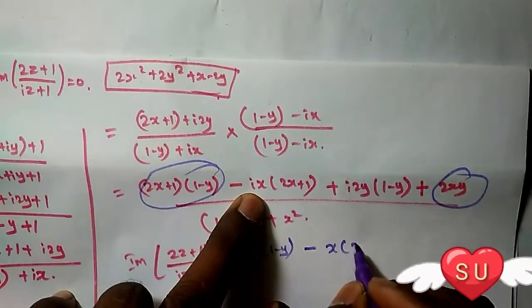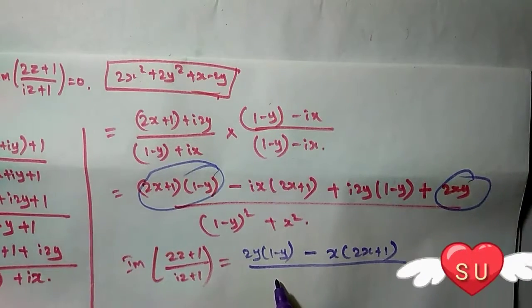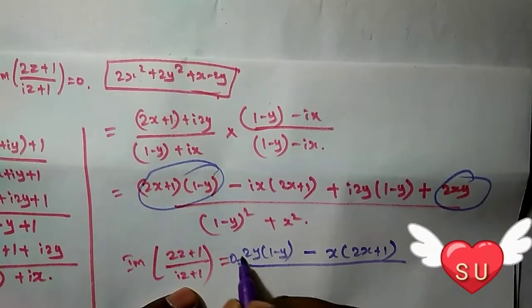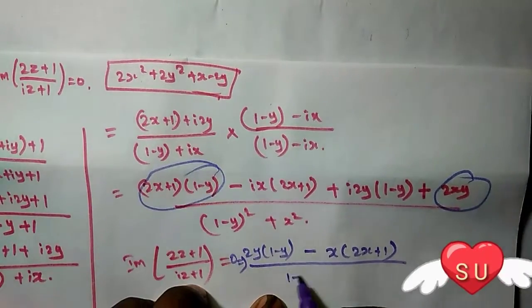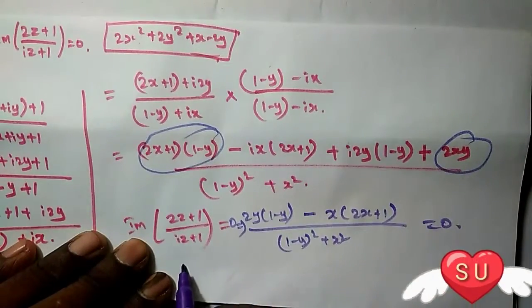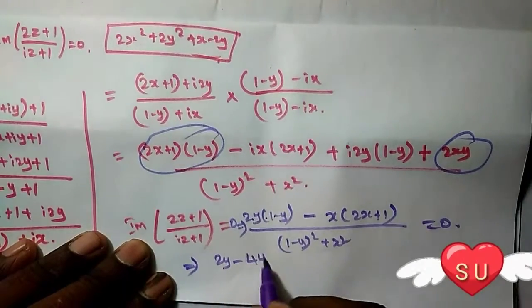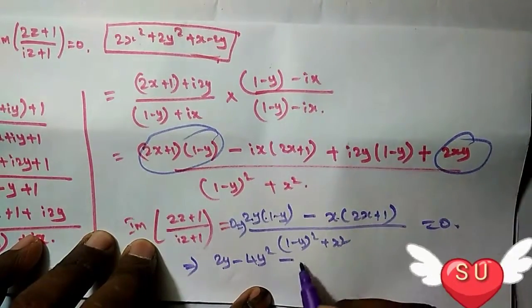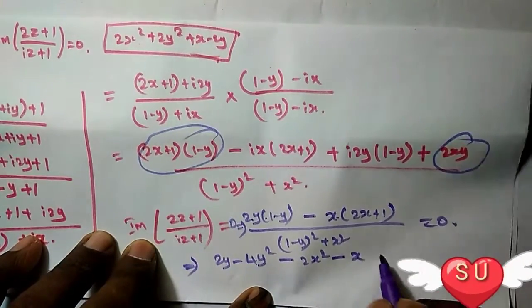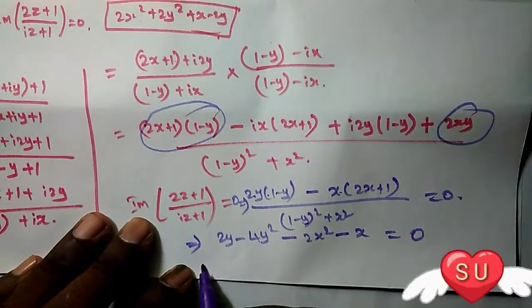Setting this equal to zero: [2y(1-y) - x(2x+1)]/[(1-y)² + x²] = 0. Since the denominator is non-zero, the numerator must be zero: 2y(1-y) - x(2x+1) = 0. Expanding: 2y - 2y² - 2x² - x = 0.